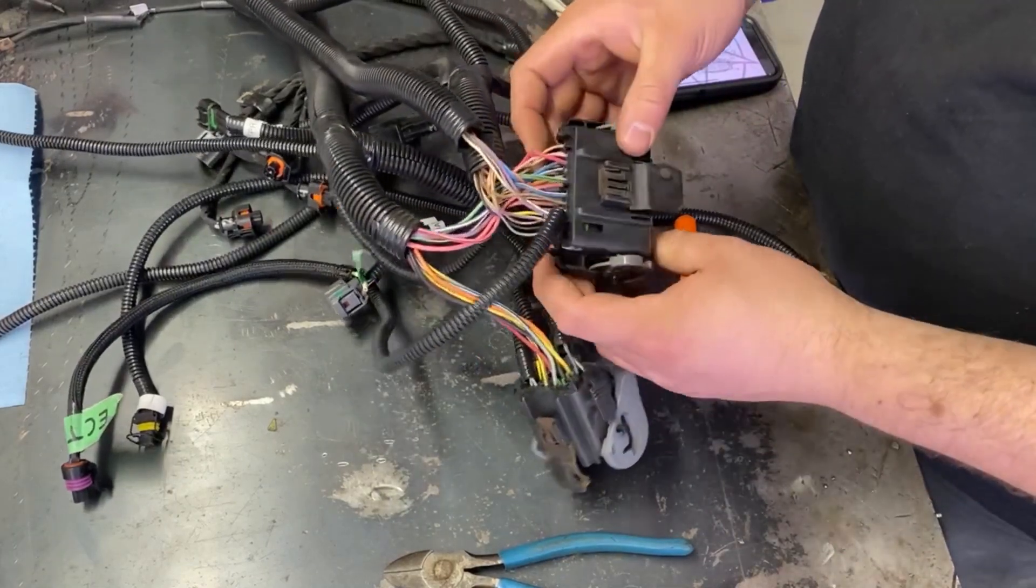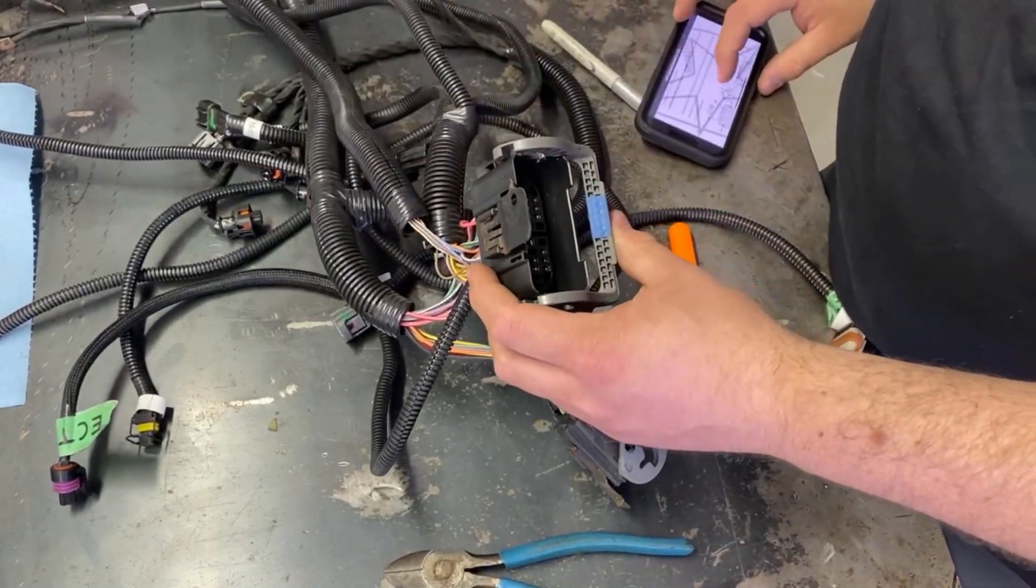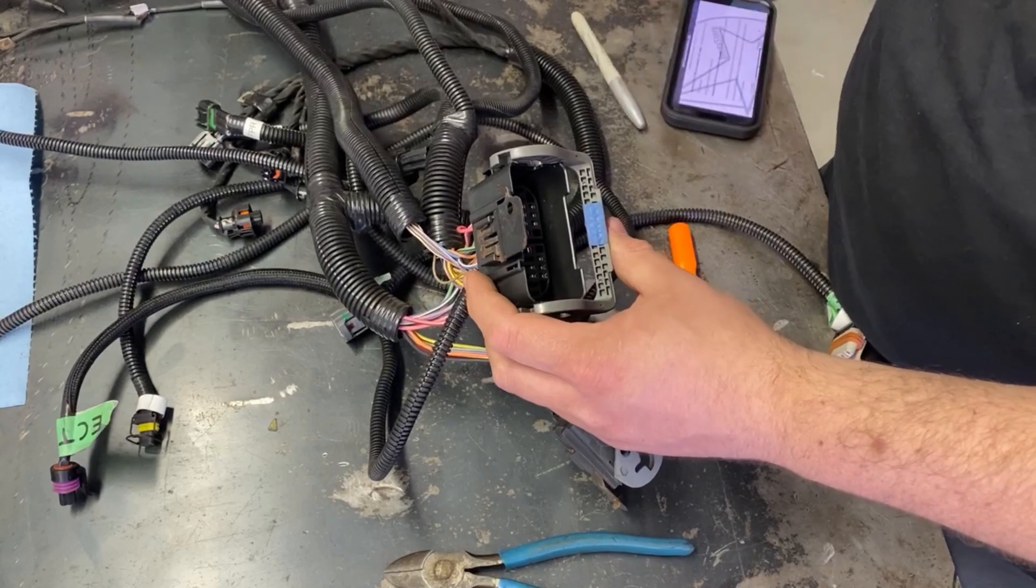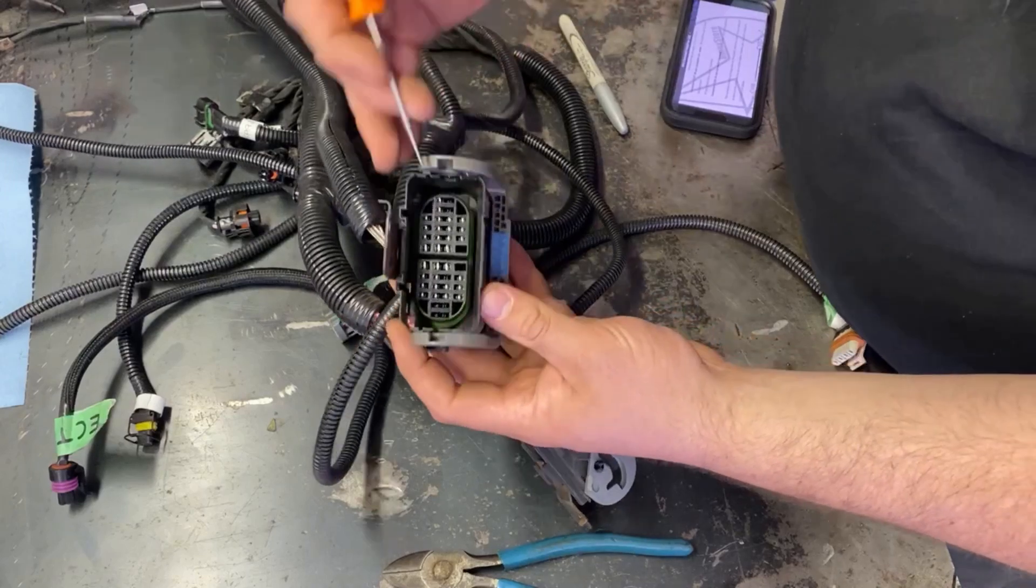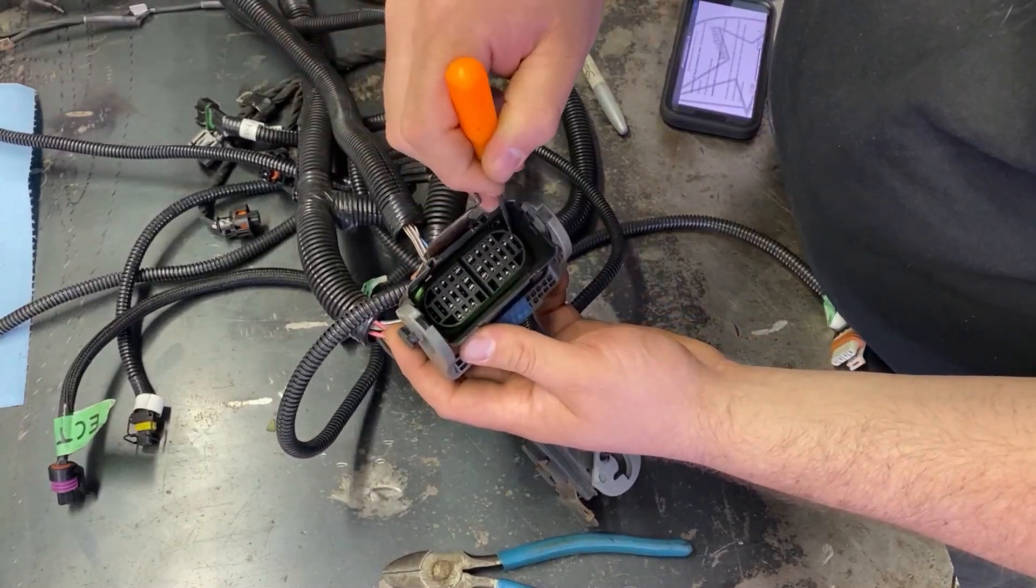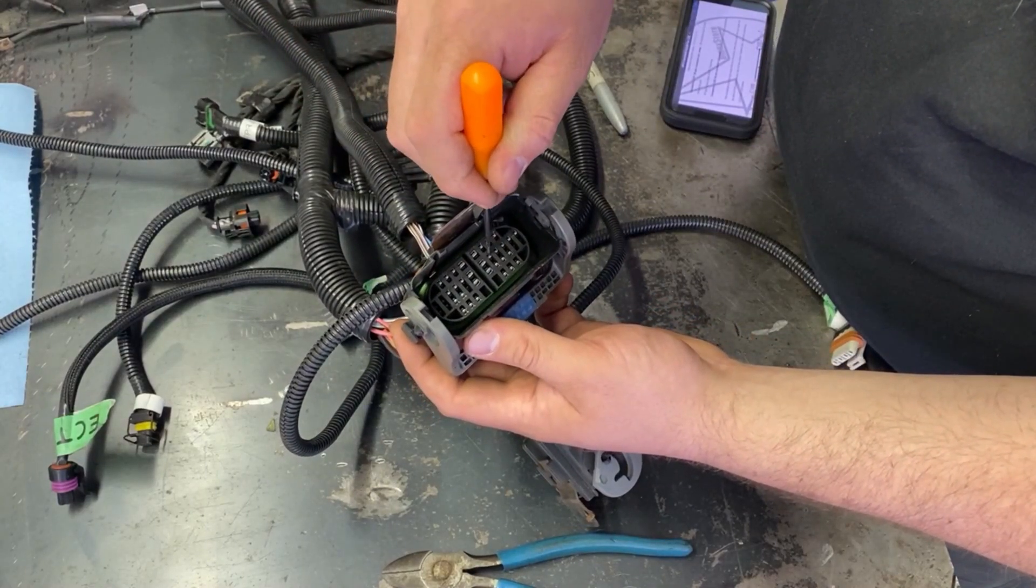Once you get to the point of pulling wires, the first one we're going to pull out is B6, which is a pink and black wire. Row B, six. One, two, three, four, five, six.